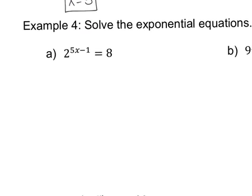Let's get to solving. These problems have quite a variety of different exponential equations. This one has a 2 as a base and an 8. Start off by looking at the bases and seeing if you can manipulate them. I probably can't manipulate the 2, but I can manipulate the 8. 2 to the third power is equivalent to 8. So I've changed the base for 8 to match the other side. Now that the bases are the same, they cancel.